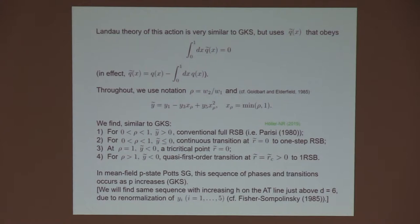What we find, similar to the results of GKS, is there's a sequence of things that can happen. If rho is between 0 and 1 and Y tilde is positive, we just get conventional full RSB. That is exactly what Giorgio had in his paper with a magnetic field in 1980. If rho is between 0 and 1, but Y tilde is less than or equal to 0, we get a continuous transition again, but we get one-step RSB instead of full RSB. At rho equals 1, there's a tricritical point, and at rho bigger than 1, we get a quasi-first-order transition at a positive temperature above where the Almeida-Thaulis transition would occur, provided Y tilde is strictly negative.